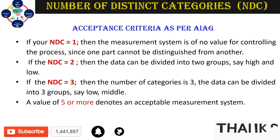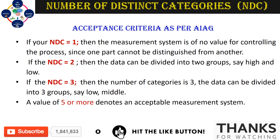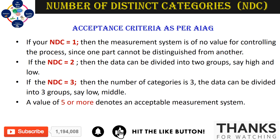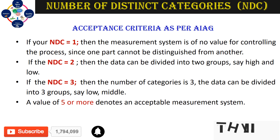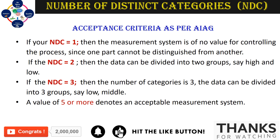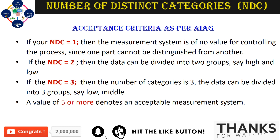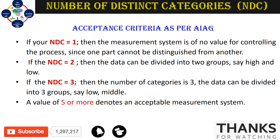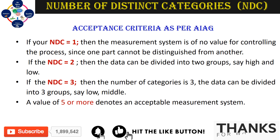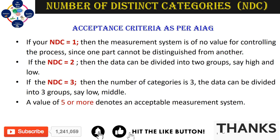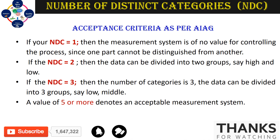How do you know if your NDC number is high enough — is it acceptable or not? There are guidelines from AIAG, the Automotive Industry Action Group. As per those guidelines: if NDC is one, the measurement system is of no value for controlling the process. If NDC is two, the data can be distributed into two categories — either high or low. If NDC is three, it can distinguish three groups: low, medium, and high.